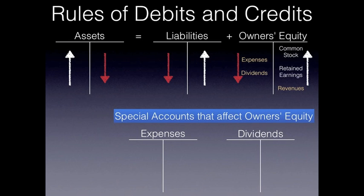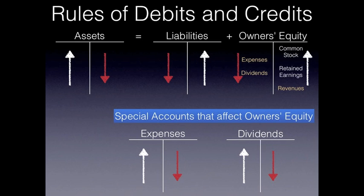As expenses and dividends go up, that will decrease owner's equity. Recall that owner's equity goes up with credits and down with debits, so as expenses increase they decrease owner's equity — therefore expenses actually increase with debits. Dividends also increase with debits, and both expenses and dividends decrease with credits. These are special accounts under owner's equity: because debit balances decrease owner's equity, and because expenses and dividends decrease owner's equity, those accounts increase with debits.